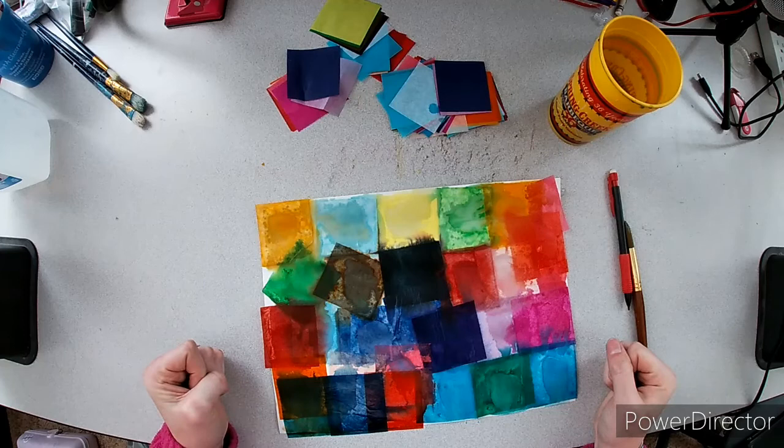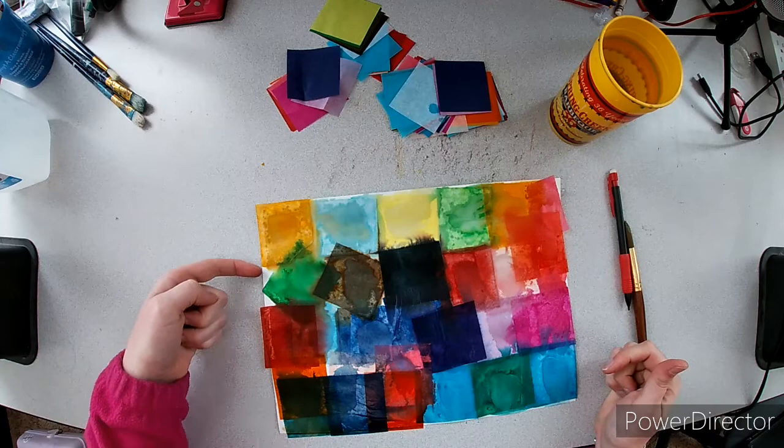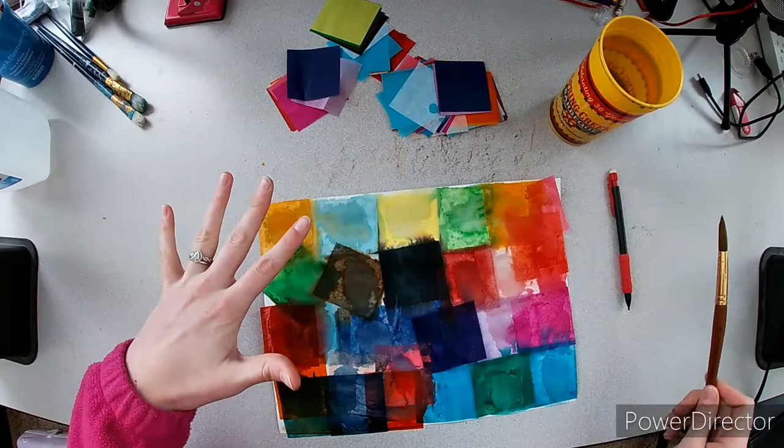Now, I'm going to look and see if there's any spots that need to be covered up. Like I have here a couple of white spots that didn't get any color on them. So I'm going to overlap some pieces to go back and cover up those spots.